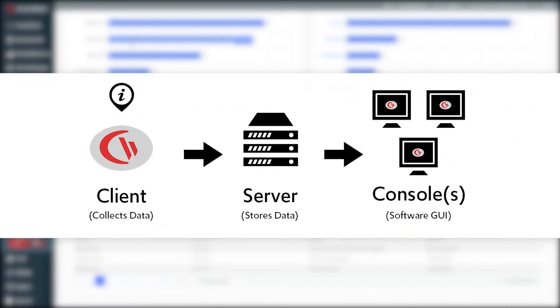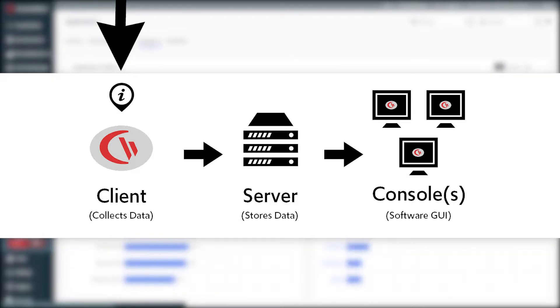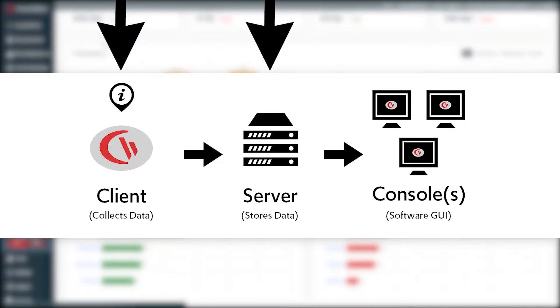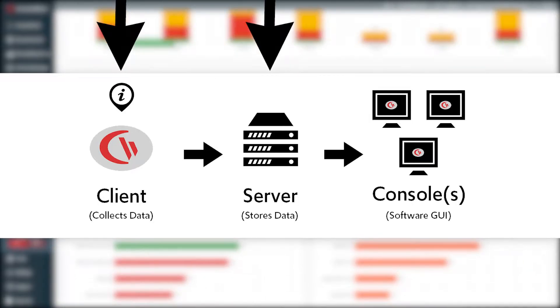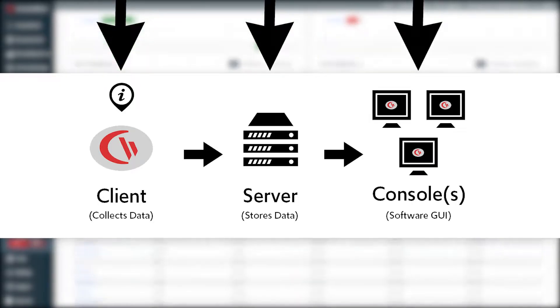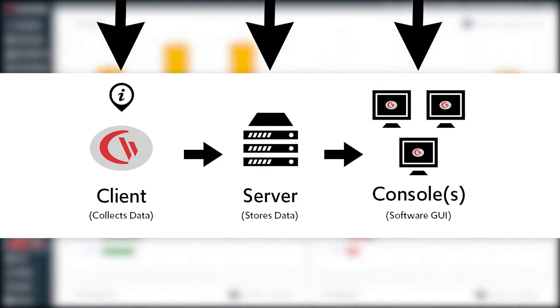Before the tutorials, I'd like to go over how CurrentWare works. CurrentWare operates on a client-server model. The CurrentWare client is a software agent that collects computer activity data and enforces security policies on the device it is installed on. The CurrentWare server accepts and stores data from the CurrentWare clients and pushes out security policies to your managed devices.